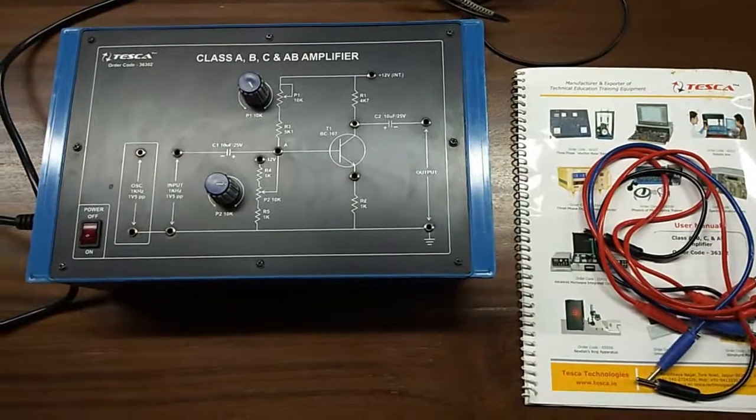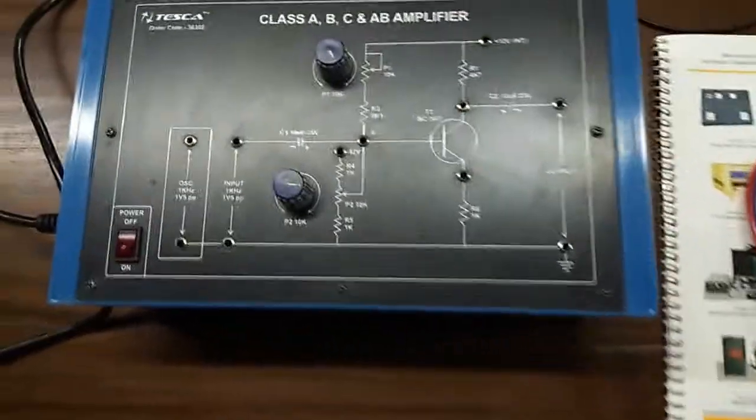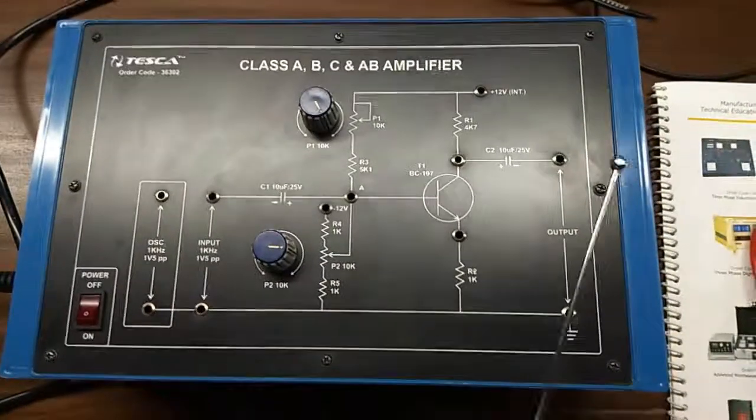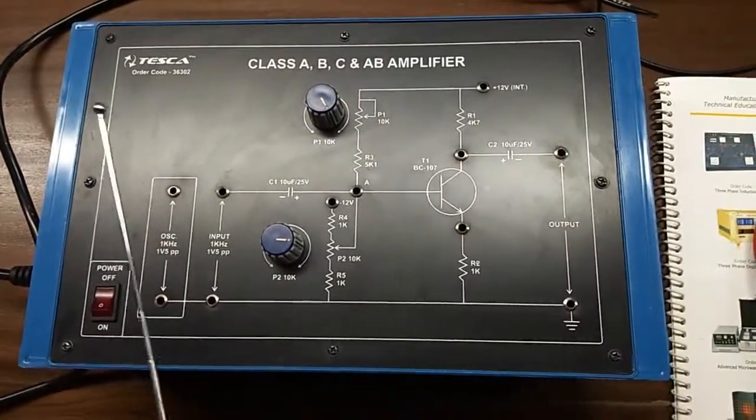Today we are going to show you our class A, B, C and AB amplifier trainer kit. The order code is 36302.